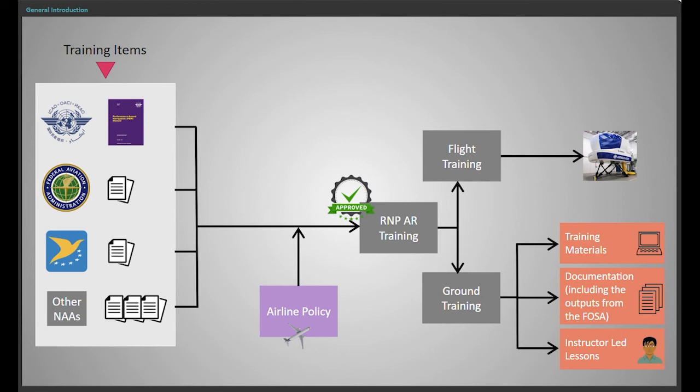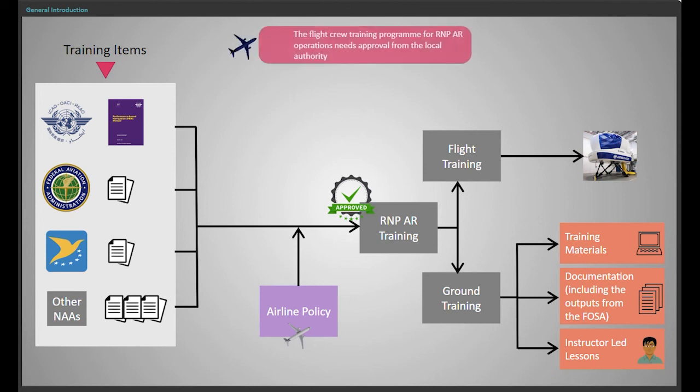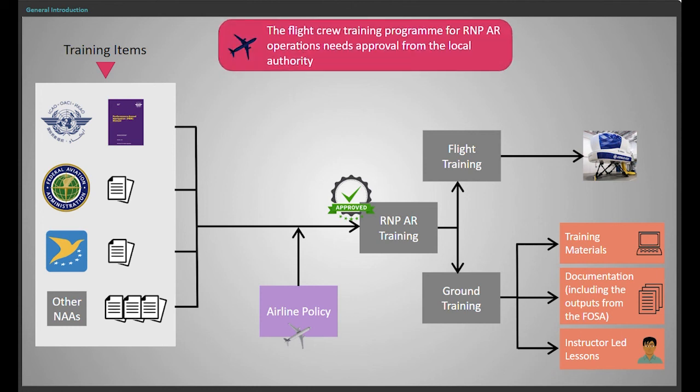The training program consists of ground training — for example, training materials, presentations, documentation, and outputs from the flight operational safety assessment — as well as flight training. The flight crew training program for RNP operations needs approval from the local authority.